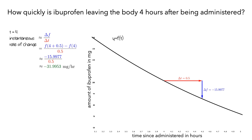On the graph, the value negative 31.9953 milligrams per hour is the same as the slope of the secant line connecting the endpoints of the interval. The secant line is close to the graph of f, but it's not perfect — the secant line is straight, while we can still see that the graph of f is curved over this interval. This is because the secant line is modeling a constant rate, but the ibuprofen isn't decreasing at a constant rate over this interval.